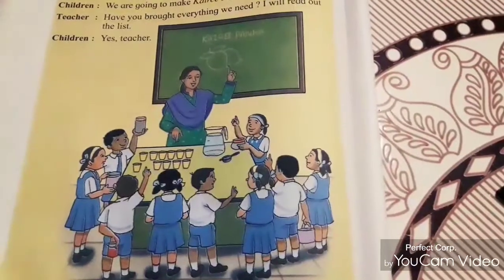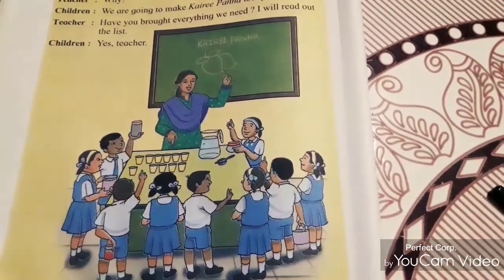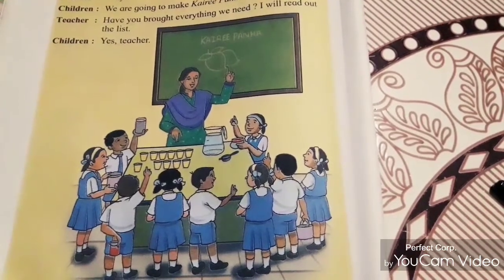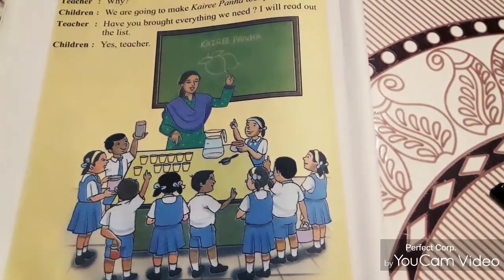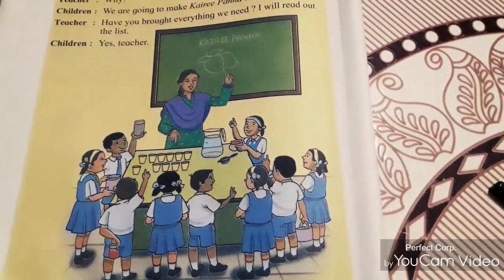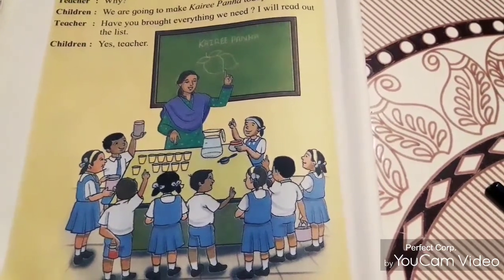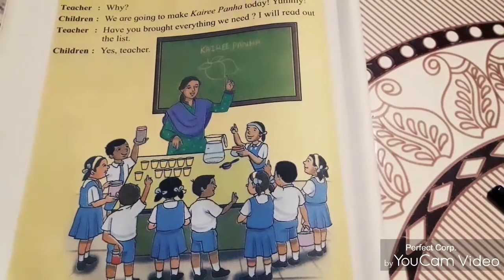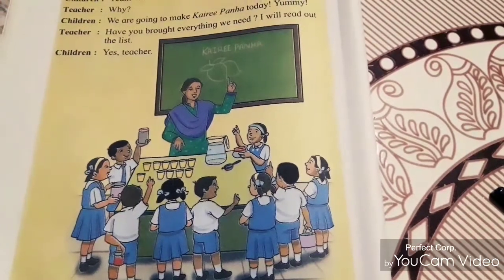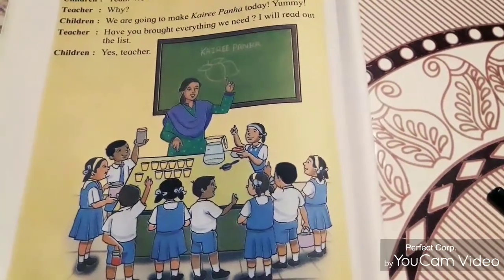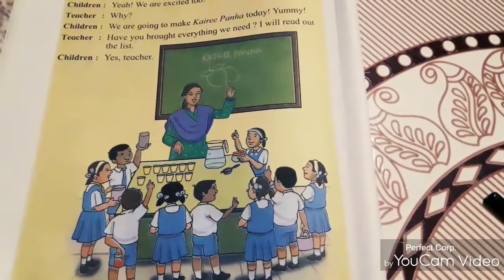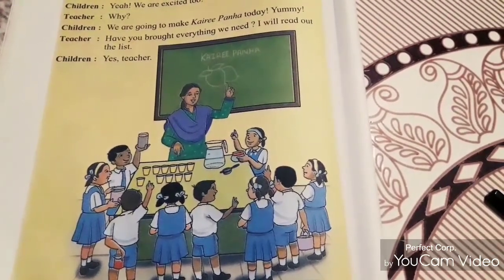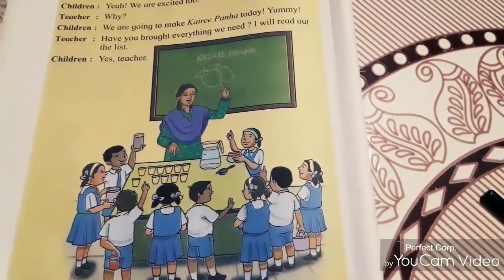Look at the picture. With the picture, what you know, what you come to understand. With the help of the picture, we come to know that children are making juice using raw mangoes. Raw mangoes means kairi. Kacche aam ka juice bana rahe hain. They are making juice by using raw mangoes.